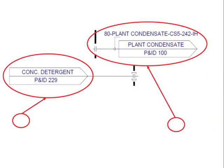What we see here is a concentrated detergent solution, with its source destination being P&ID 229. And what we see here is plant condensate, with its destination P&ID being P&ID 100.